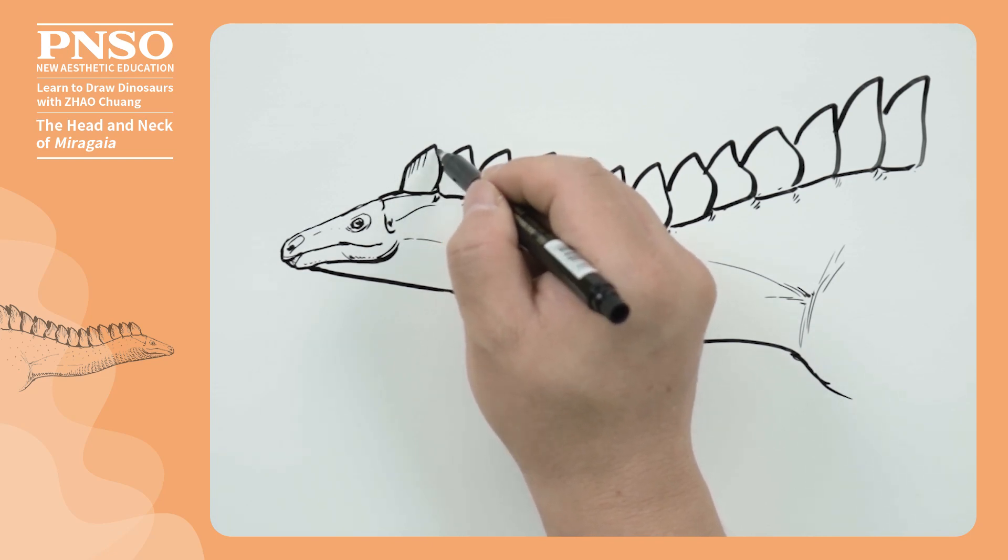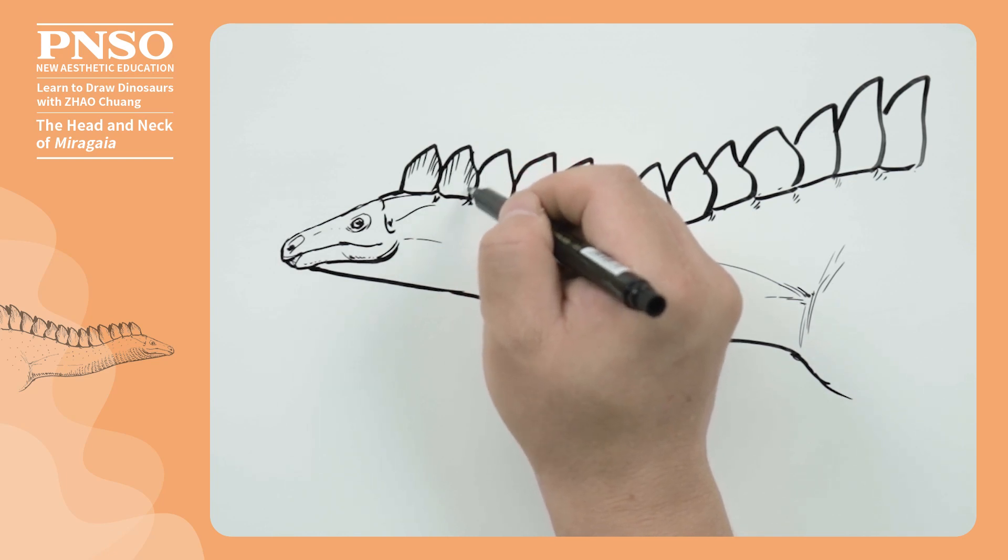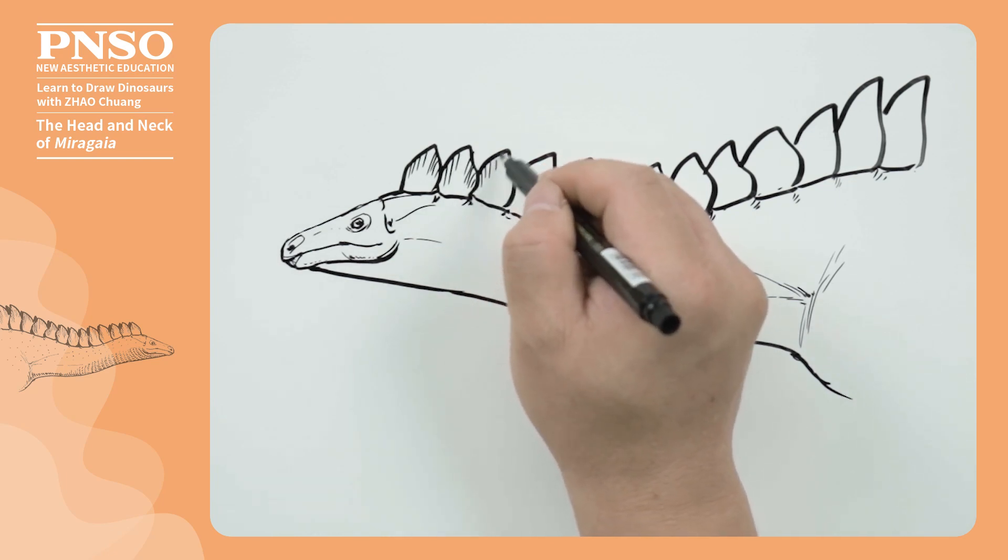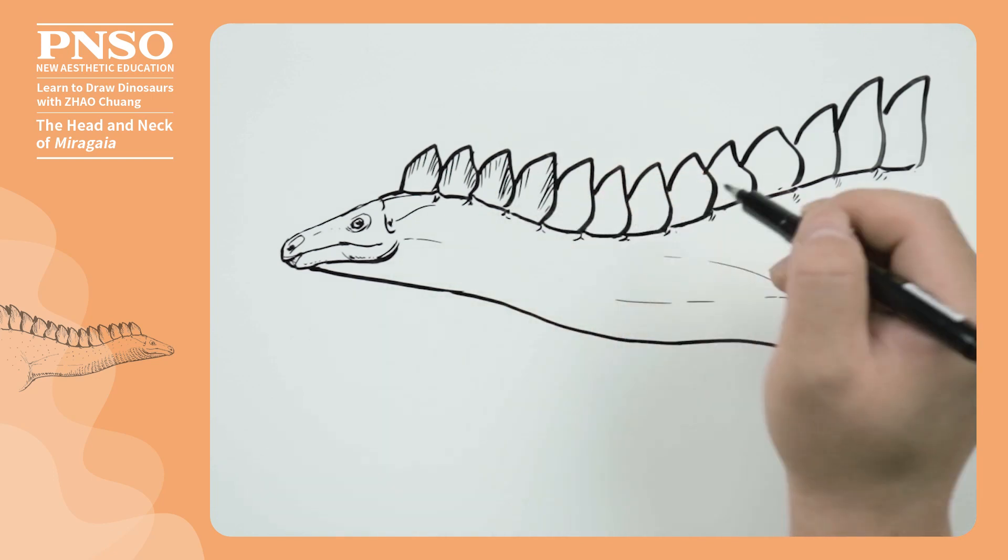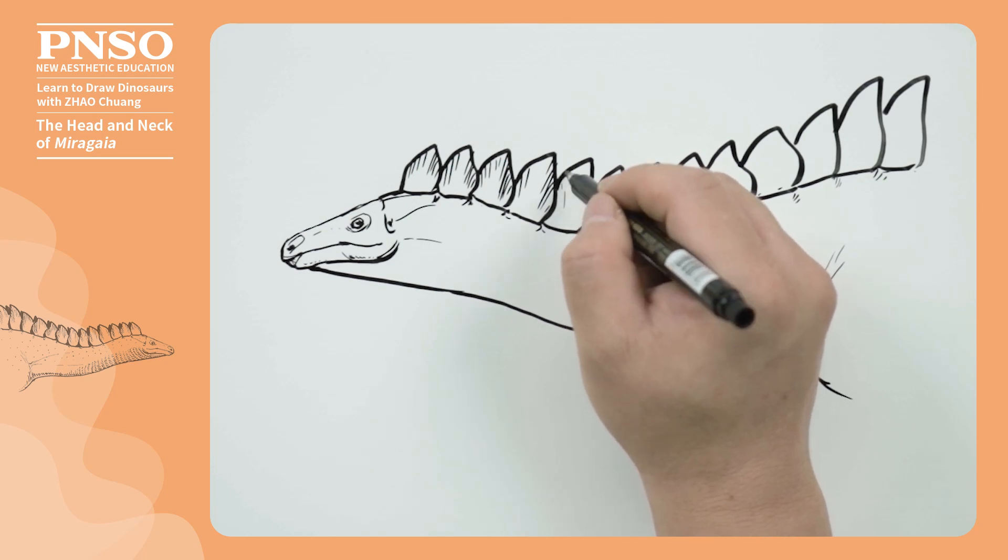On the bony plate surface, we can draw very fine textures. Although these textures were actually very dense and run through the entire bony plate, we should not draw them so densely, and only partially show them, or it is easy to mess up. We only need to show them at the edges slightly.